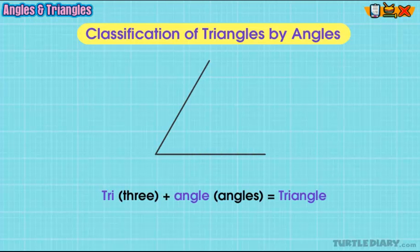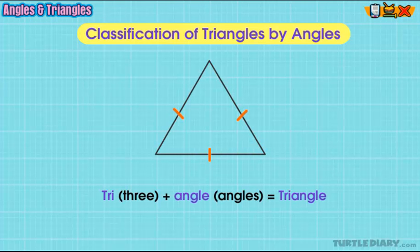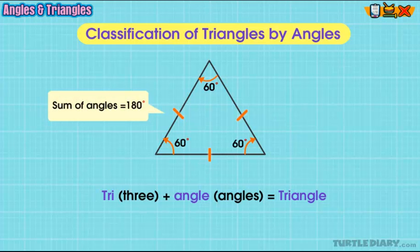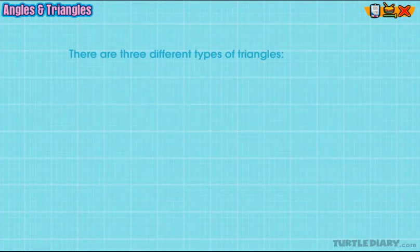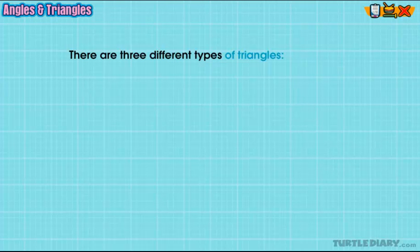Triangles have three sides and three angles. The sum of all the angles in any triangle is 180 degrees. Triangles are characterized by the angles within them. There are three different types of triangles.